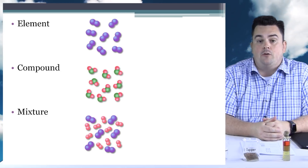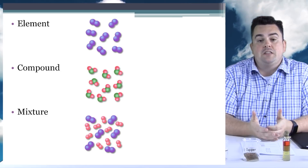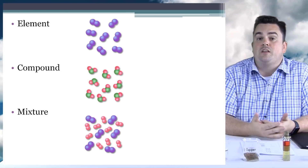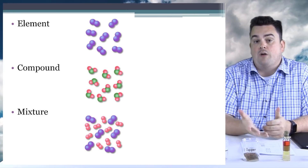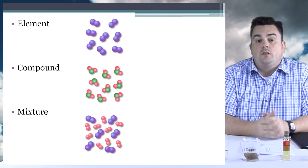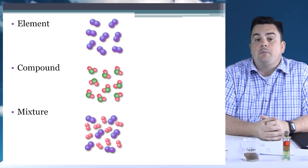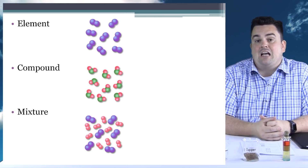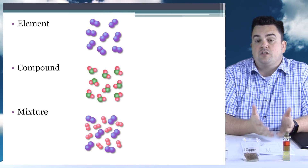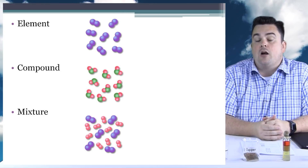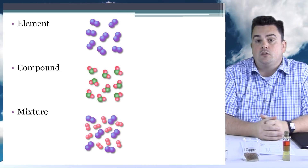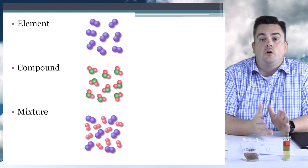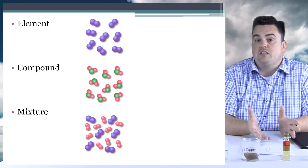The second one here is a compound. Now in this case we know it's a compound because it has two different types of circles, being red and green. The last one, we have a mixture. Now this is a mixture of diatomic elements. We have some represented by two larger purple circles and some represented by smaller red circles.